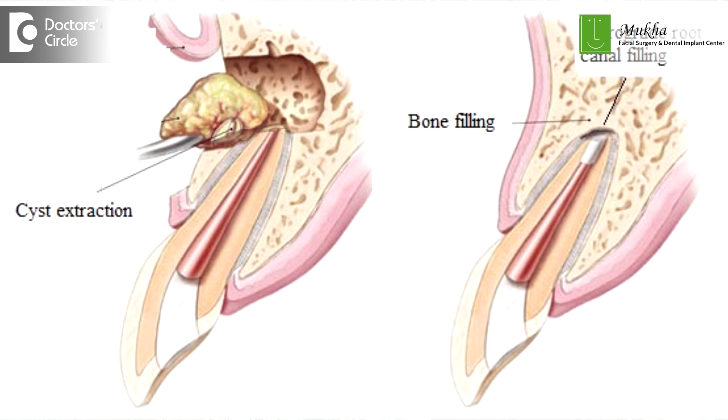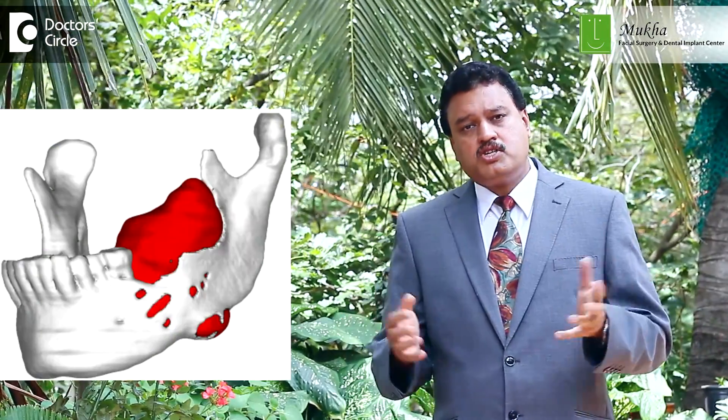The cyst gradually becomes bigger and bigger at the expense of your bone, so we have to perform a simple surgical procedure to remove the entire cyst. When we take out the cyst, there will be a large cavity in the jaw bone, and that's where we need to place a graft — either your own bone from the hip or rib, or a synthetic graft material — which helps in regeneration of the bone.